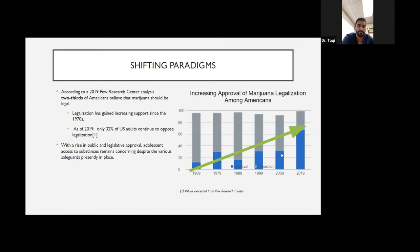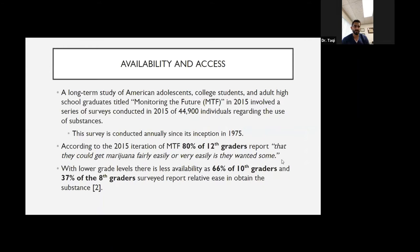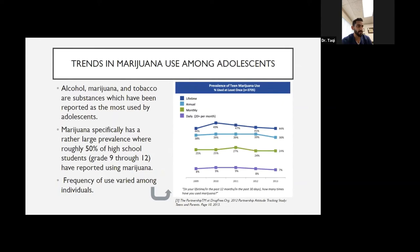The long-term study of American adolescence college students and adult high graduate, which is called Monitoring the Future in 2015, conducted a survey of around 45,000 individuals regarding the use of the substance. The survey has been conducted since 1975 annually. According to 2015, the numbers were very concerning. About 80 percent of the 12th graders reported that they could get marijuana fairly easily or very, very easily if they wanted. About 66 percent of the 10th graders had the same response, and 37 percent of the 8th graders think that they can get marijuana very easily if they want.